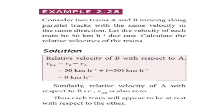Relative velocity of B with respect to A: V_AB vector equals V_B minus V_A. Here V_B is the velocity of train B, V_A is the velocity of train A. Just subtract the two values. The answer is 0, because each train has the same velocity: 50 minus 50 equals 0. Similarly, relative velocity of A with respect to B is also 0.